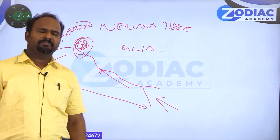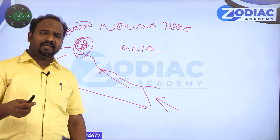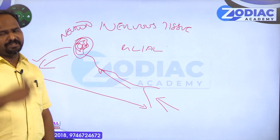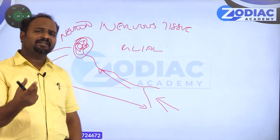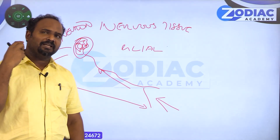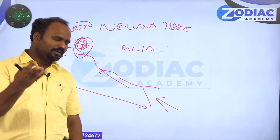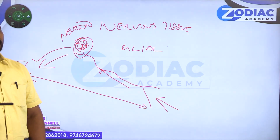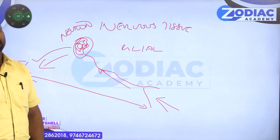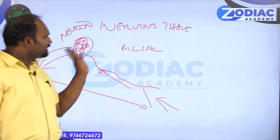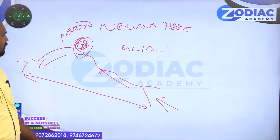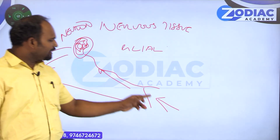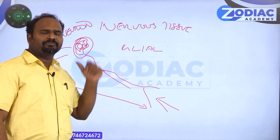Stimuli are the external impulses or information present in the environment that have to be observed and responded to properly. This is necessary for the survival of the species. The nervous tissue has two major components: one is neuron and another one is neuroglia.